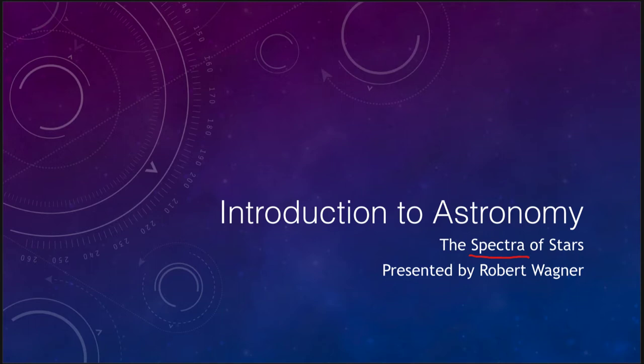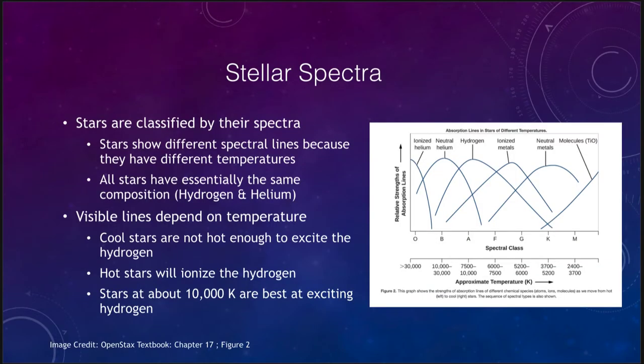That includes things like their sizes, their compositions, and their velocities, which we will talk about in this lecture. But first we really want to look at how stars are classified and organized based on their spectra. What we find is that we do classify stars by the appearance of their spectra — what kind of lines we see in the spectrum.